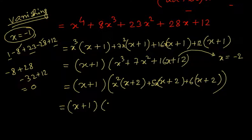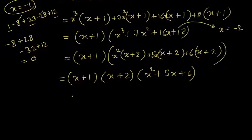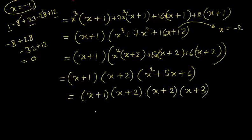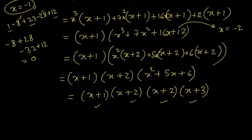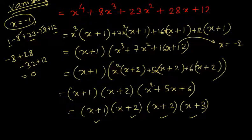So we have got the factors (X+1)(X+2)(X²+5X+6). Now X² + 5X + 6 can very easily be factorized using middle-term factorization, giving (X+2)(X+3). So we have factorized this biquadratic polynomial into its four linear factors. Luckily the roots are integral, so we are lucky this time.